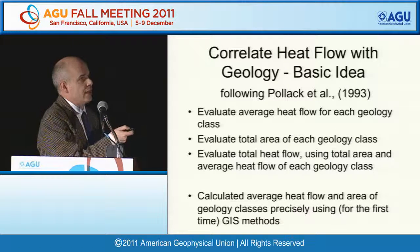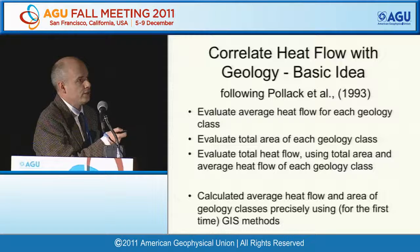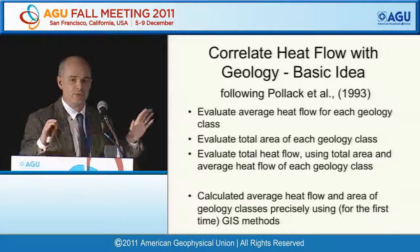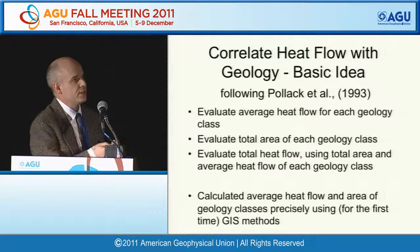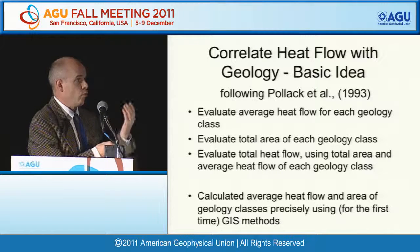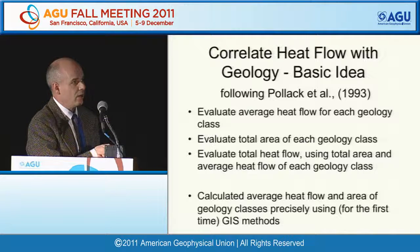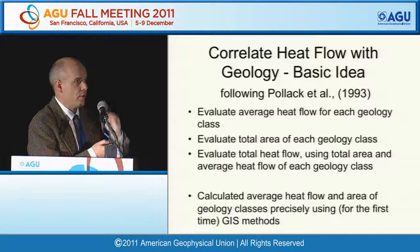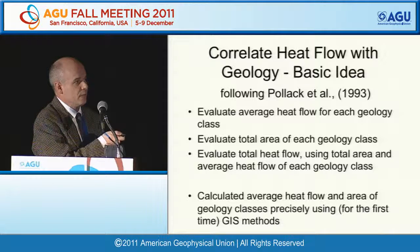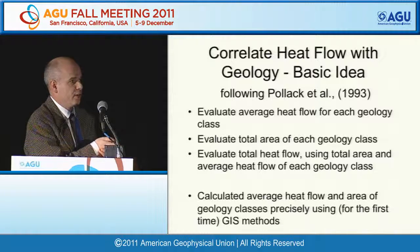In this study, we follow the same assumption as Pollock et al., who assumed there is some correlation between heat flow and geology. We'll evaluate an average heat flow for each geology class, evaluate the total area of each geology class, then multiply the total area by the average heat flow and sum over all geology classes. This will be done precisely using GIS methods for both the area calculations and the geology class assignments.